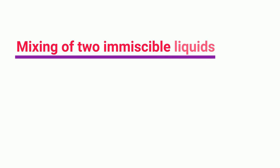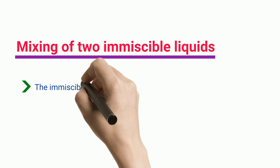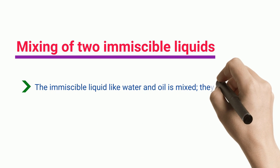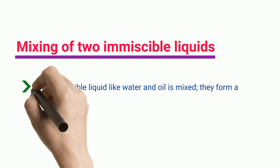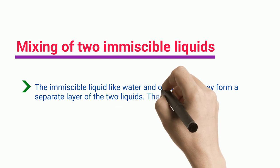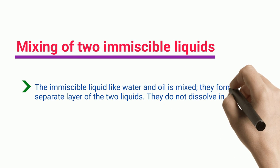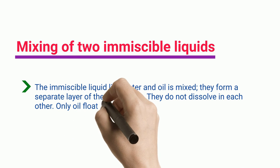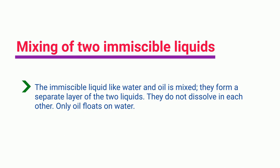Mixing two immiscible liquids: when immiscible liquids like water and oil are mixed, they form separate layers — they do not dissolve in each other. Only oil floats on water.